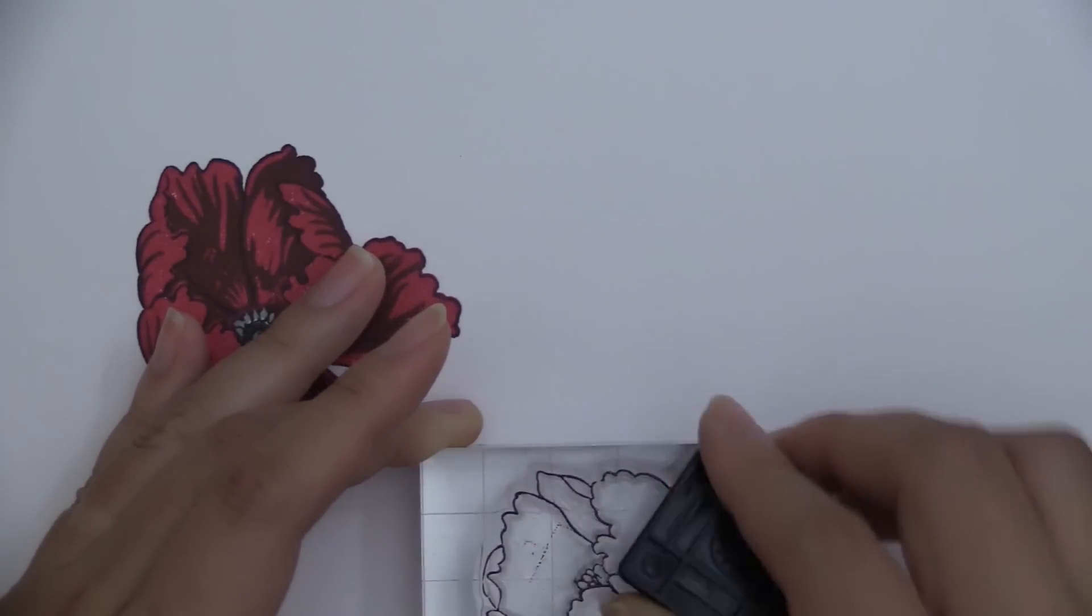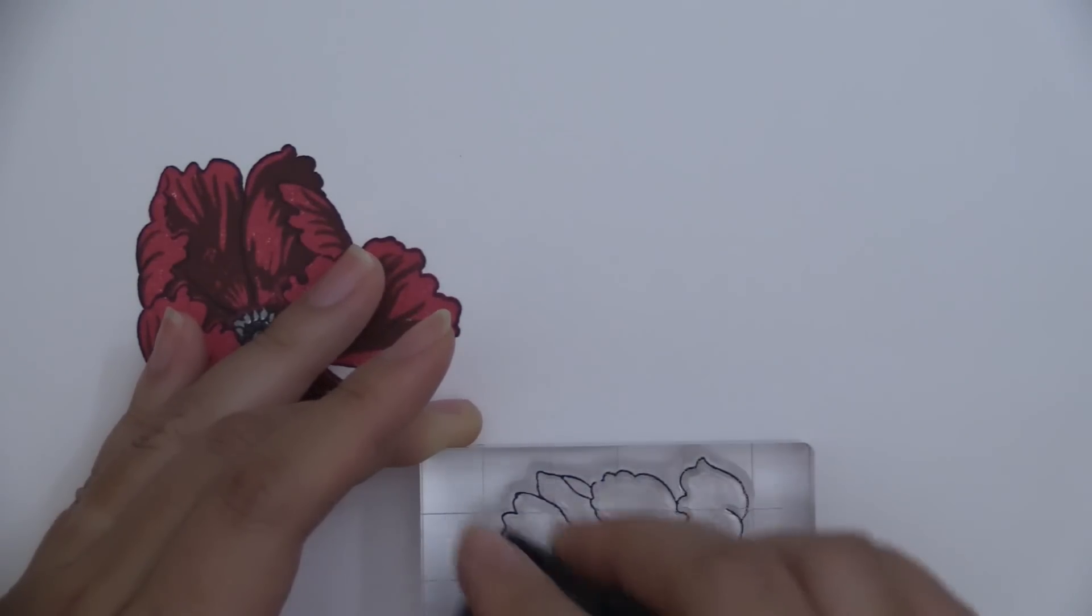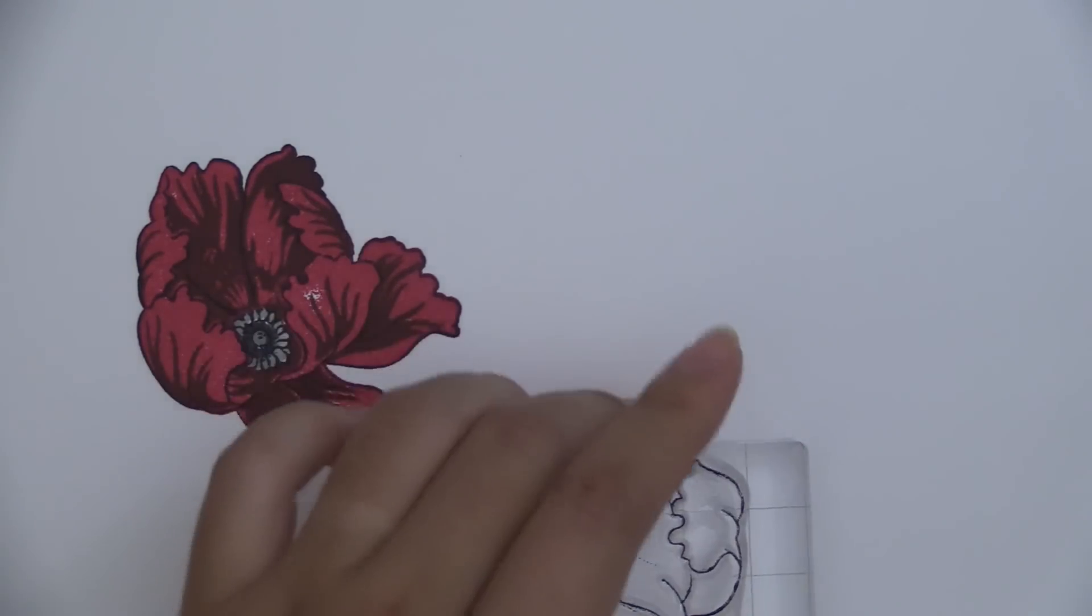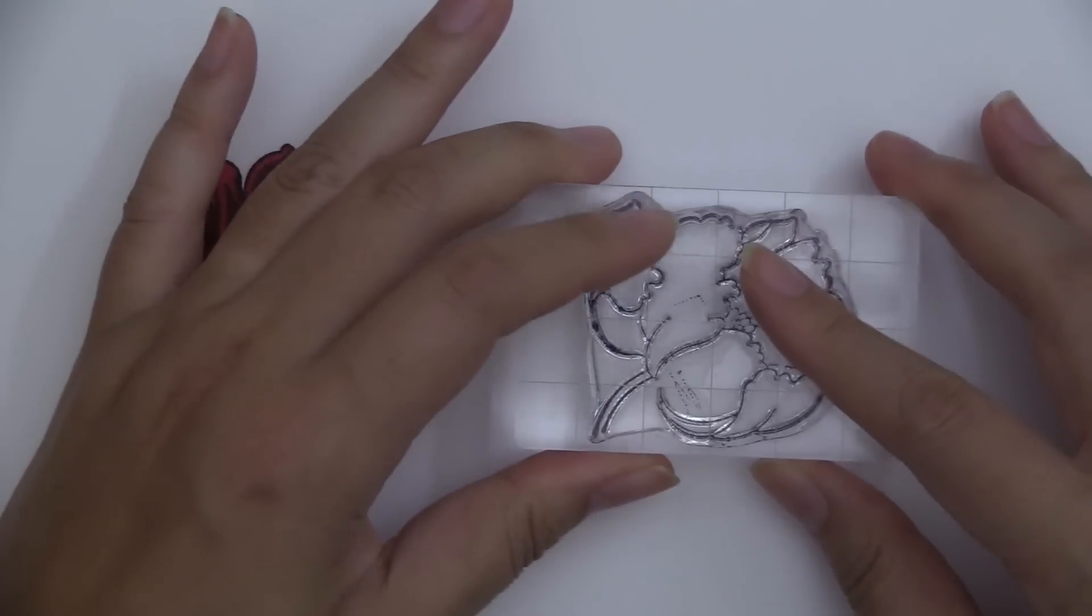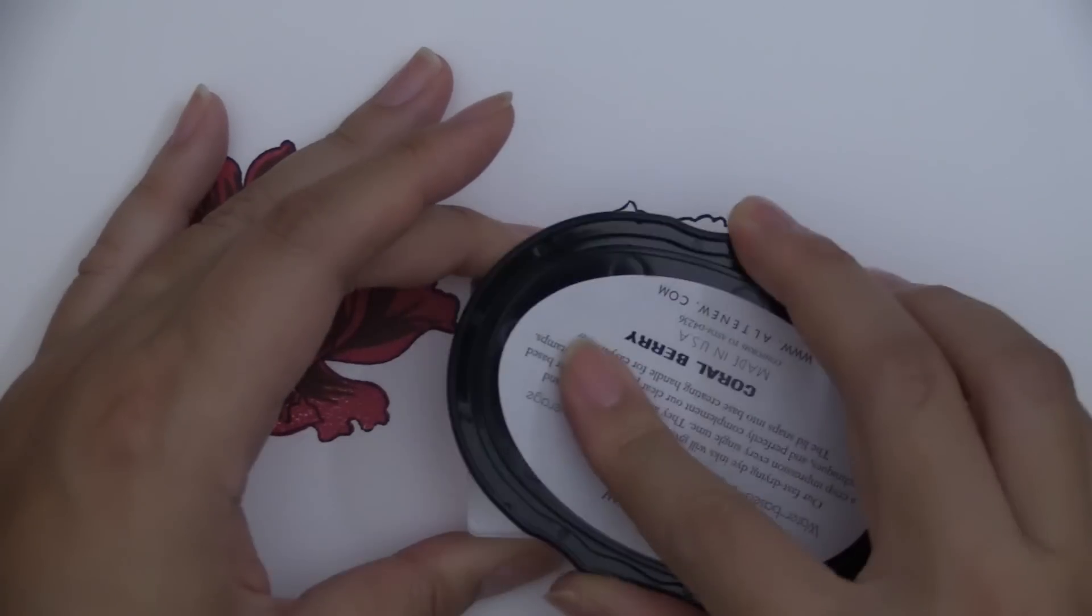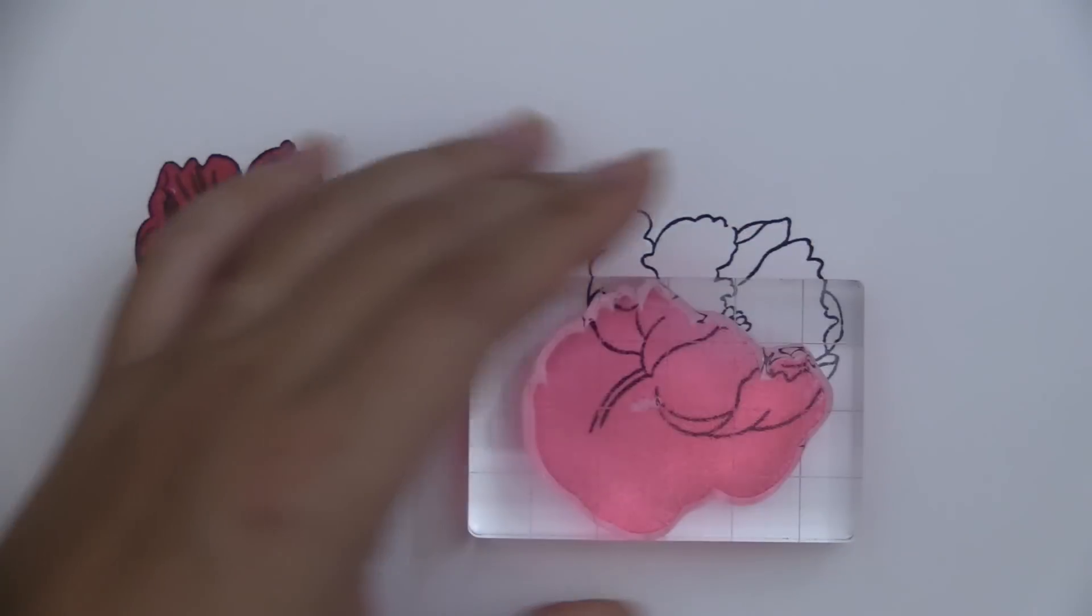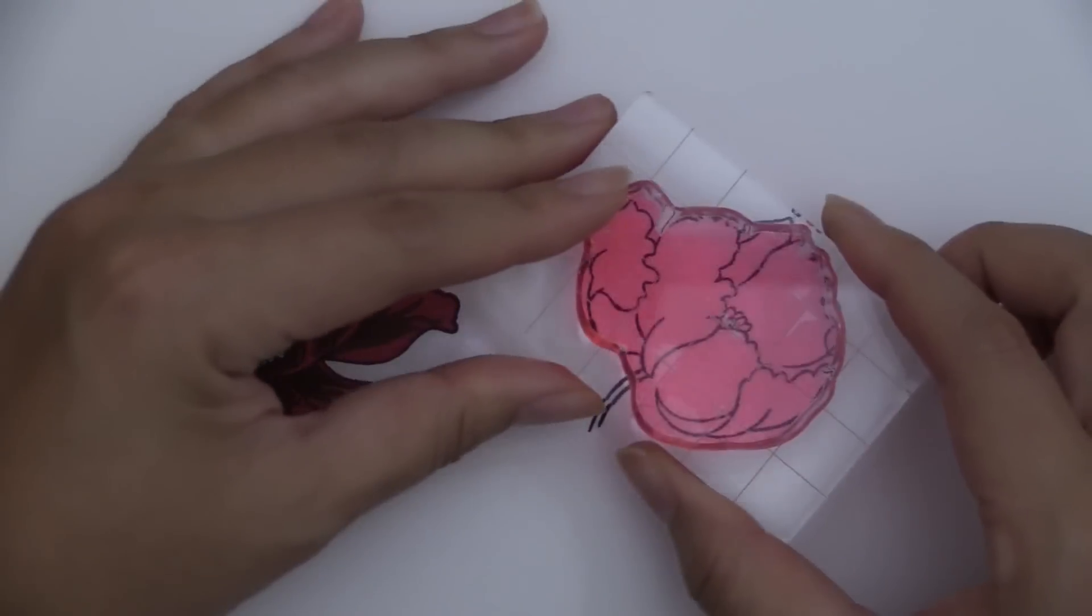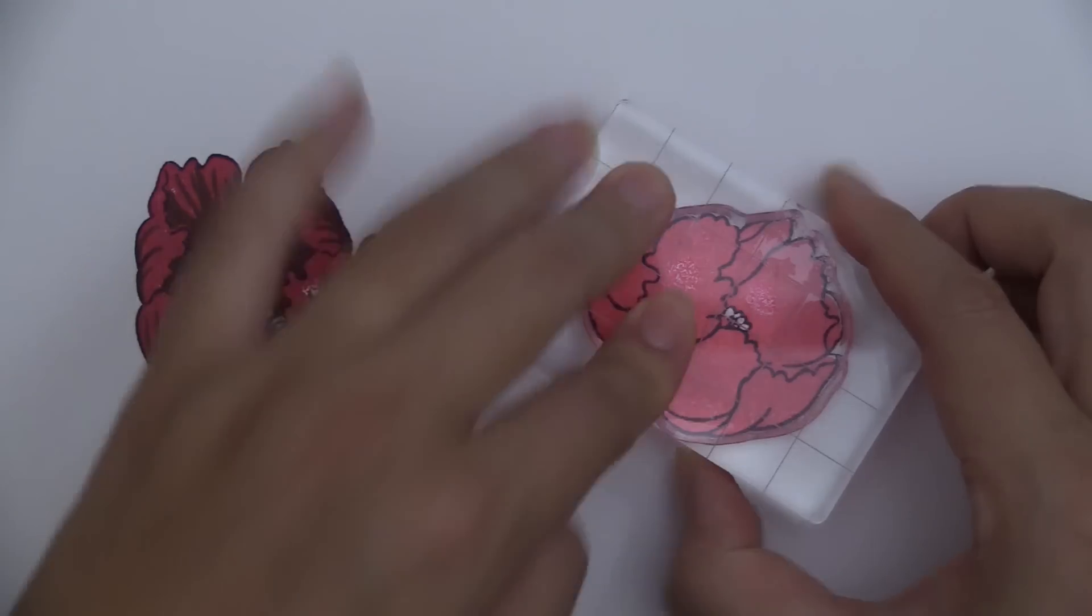Let's move on to the second petal. I'm stamping the outline once again first using jet black ink and we're going to use coral berry for the solid layer which goes and fits right in between those outline images.